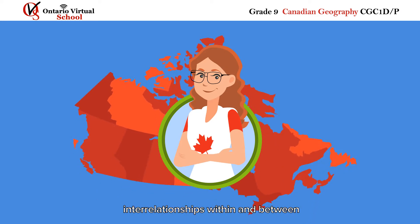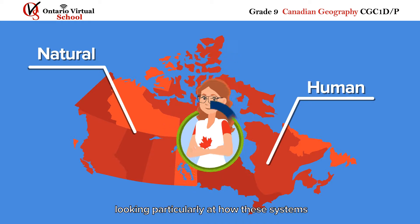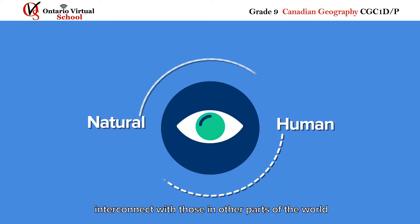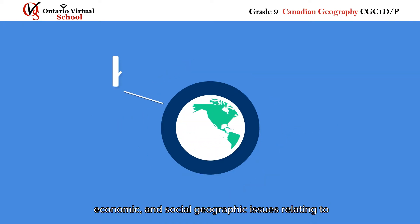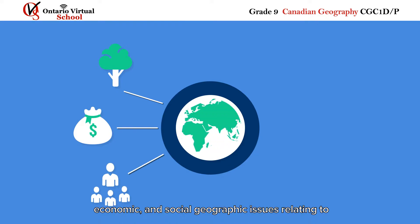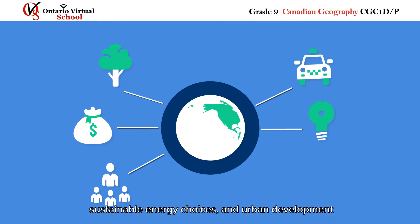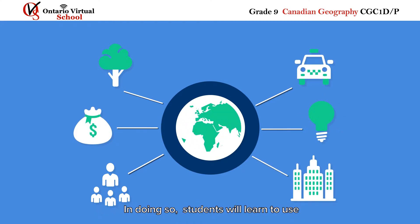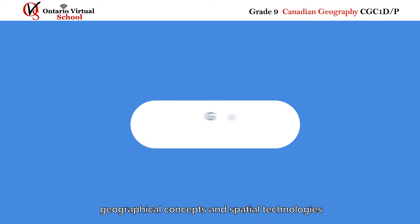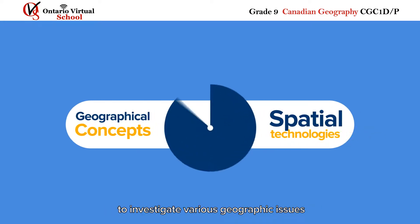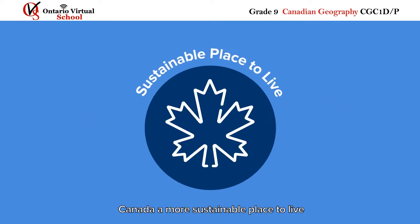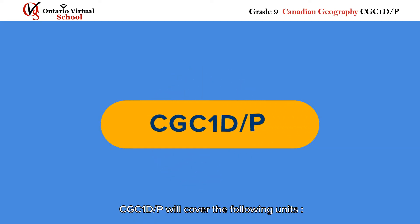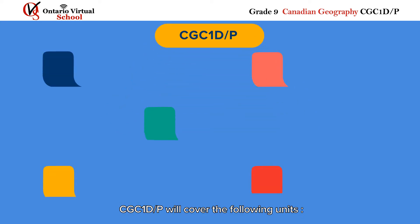Grade 9 Canadian Geography examines interrelationships within and between Canada's natural and human systems, looking particularly at how these systems interconnect with those in other parts of the world. Throughout the course, students will explore environmental, economic, and social geographic issues relating to topics such as transportation, sustainable energy choices, and urban development. Students will learn to use geographical concepts and spatial technologies to investigate various geographic issues, with the overarching focus of making Canada a more sustainable place to live. CGC 1D-P will cover the following units.